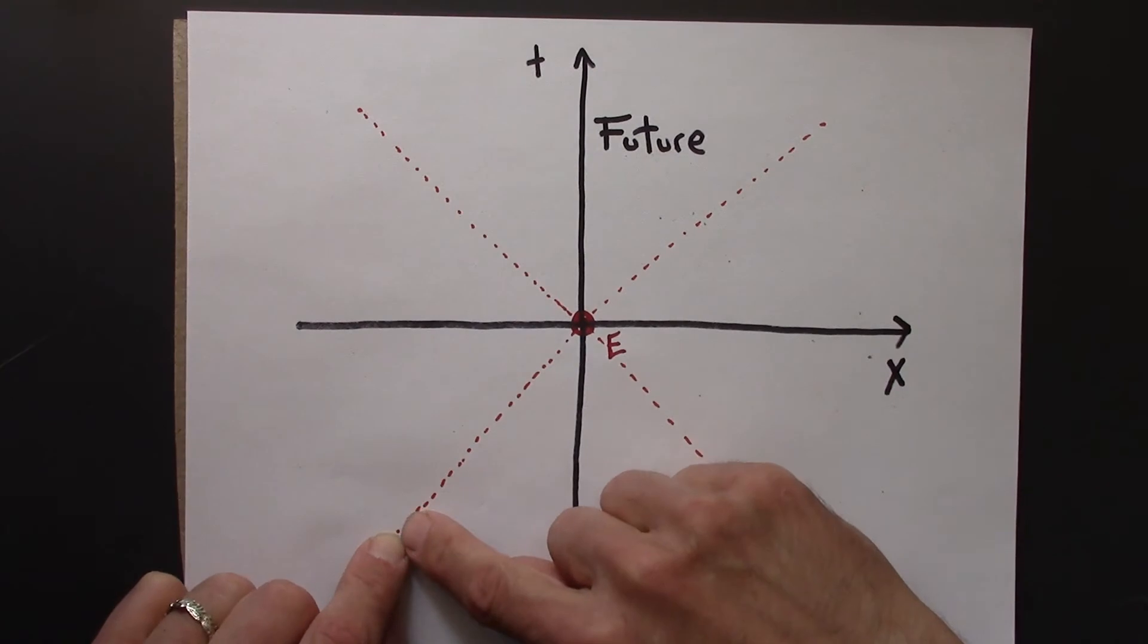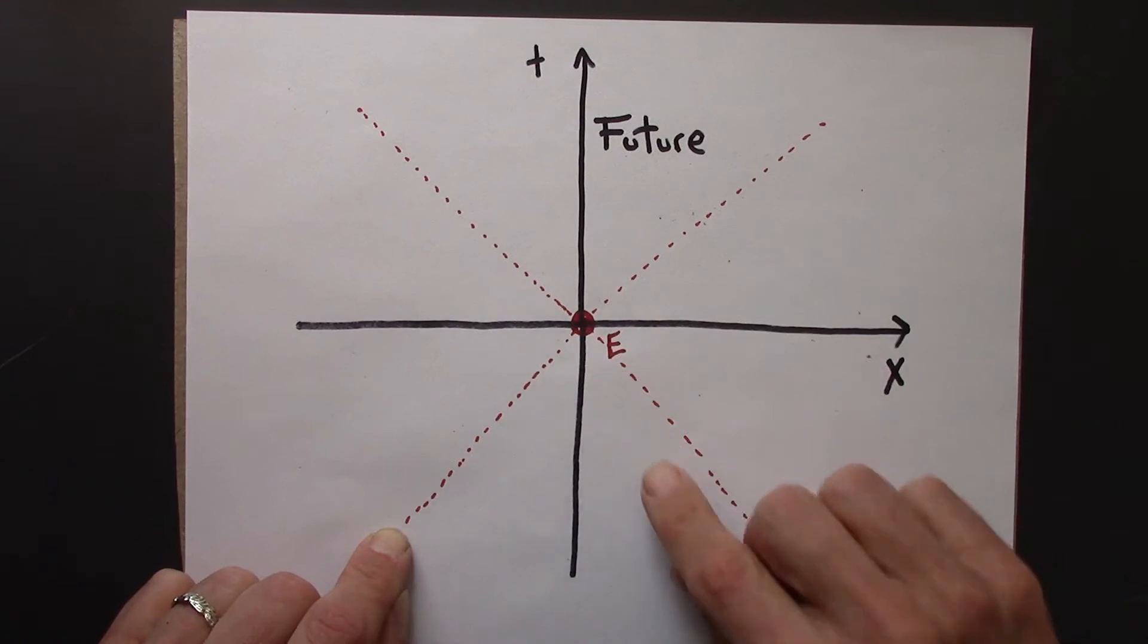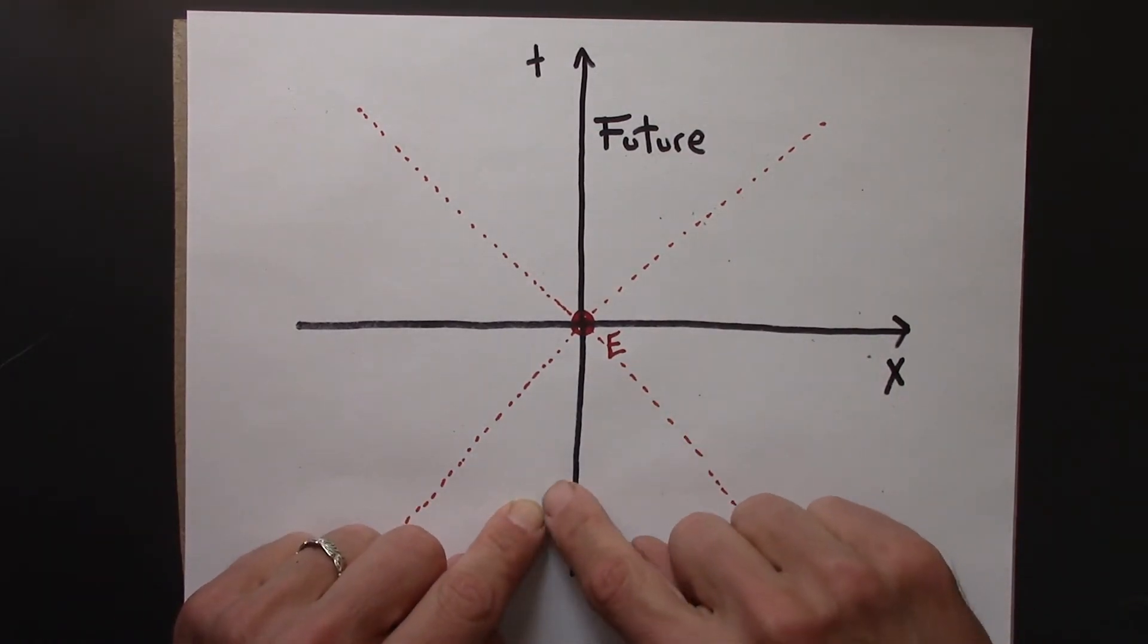If I'm here, I just barely, there's just enough time. If the signal can travel at the speed of light, it can make it to e. And if I'm here, then there definitely can be a signal that can make it to e.